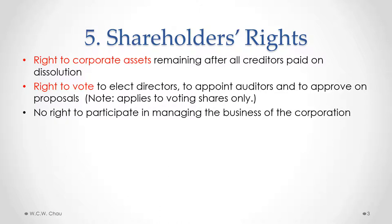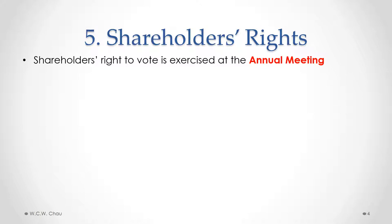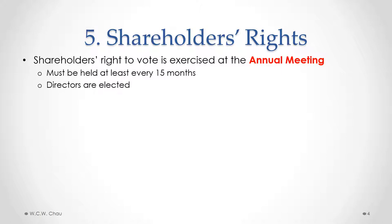There is no right to participate in managing the business of the corporation if you are a shareholder. The shareholder's right to vote is exercised at an annual meeting. A corporation is required to hold an annual meeting at least every 15 months. At this meeting, the directors are elected, and also an auditor is appointed.